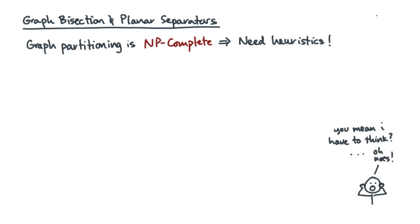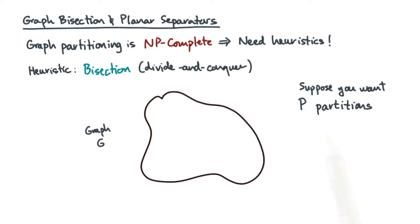Here's a first simple heuristic. It's called graph bisection, and it's based on the principle of divide and conquer. The idea is simple. Suppose you want P partitions.